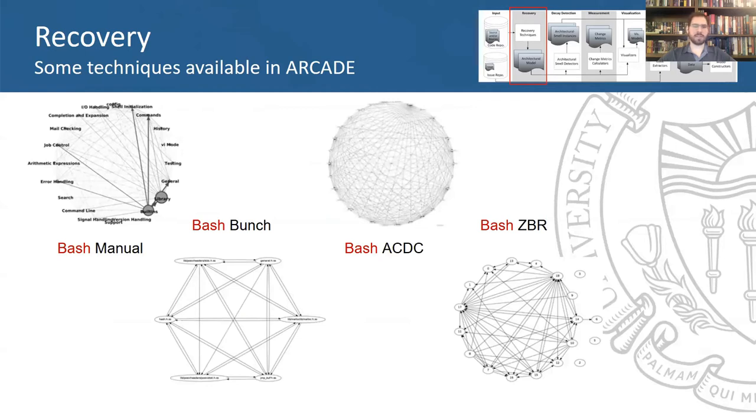For example, here we have the BASH manually recovered architecture on the left side and on the right its architecture as recovered by BUNCH, ACDC, and ZBR, three of the nine techniques that Arcade has available.